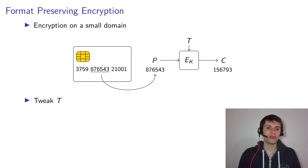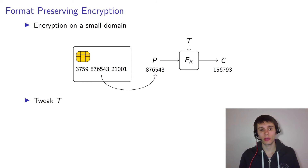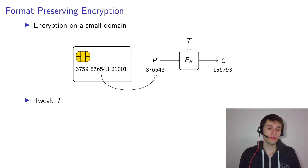Format-preserving encryption allows you to encrypt a plaintext with a given format — for example, the fact that it's a six-digit integer — to a ciphertext which shares the same format. An example of that might be the encryption of credit card numbers, applied to the six middle digits of that number.